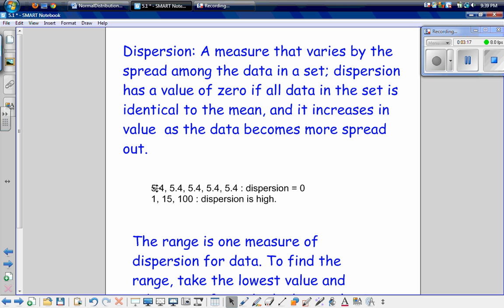Here's an example. We have our set of data is 5.4, 5.4, 5.4, 5.4, and 5.4. Our dispersion is going to be zero. All of the data values in the set are equal to our mean. The second example is that 1, 15, and 100. So here our dispersion is going to be very high because all the data values are scattered far away from the mean.